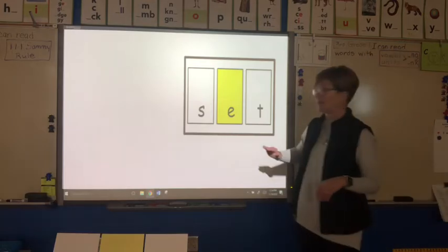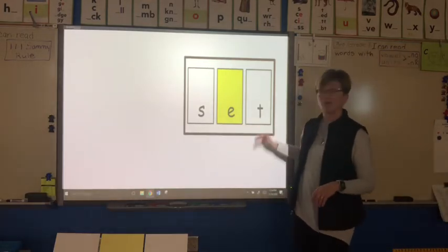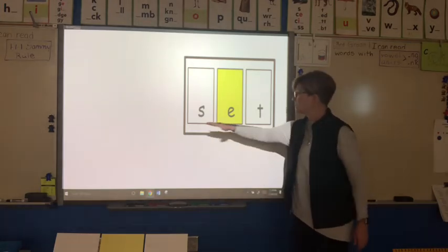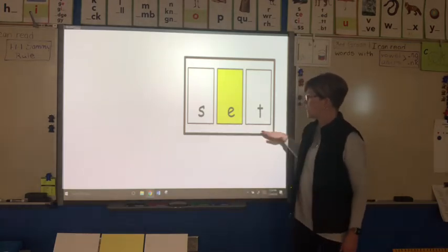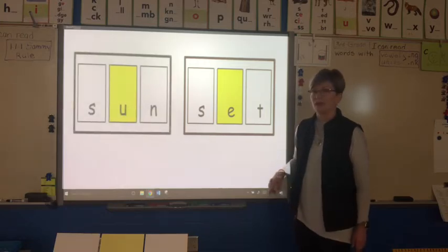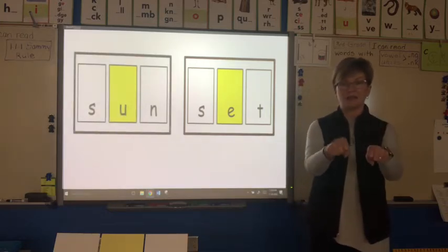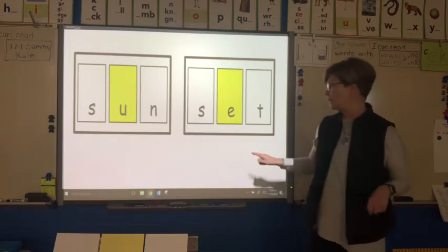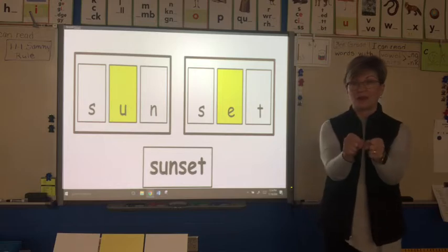Let's sound it out together: s-e-t, set. Let's bring that first syllable back: sun, set — sunset. If we say it fast, we get the word sunset without any spaces.